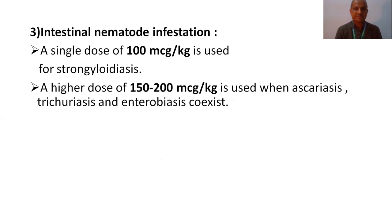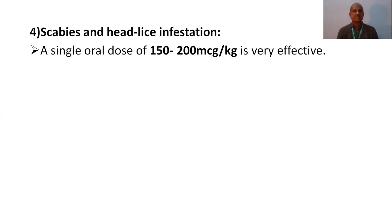One more use: intestinal nematode infestation. A single dose of 100 mcg per kg is used for strongyloidiasis. A slightly higher dose of 150 to 200 mcg per kg is used when Ascaris, trichuriasis, and enterobiasis coexist. One more condition is scabies — a single oral dose of 150 to 200 mcg per kg is very effective. Ivermectin can be used in combination; in microfilaria conditions, it can be combined with doxycycline.